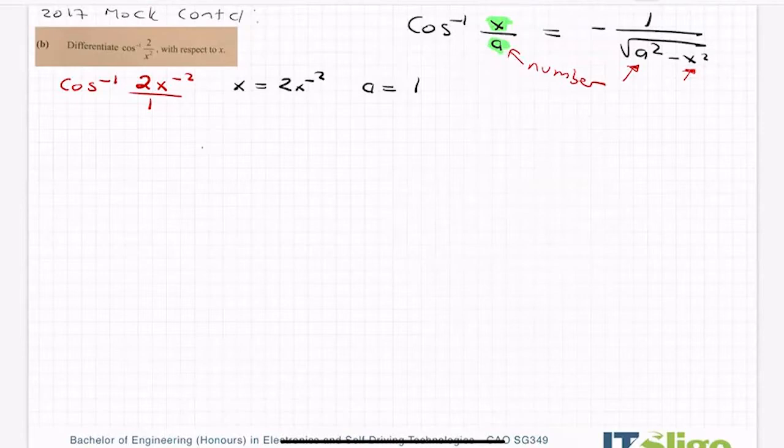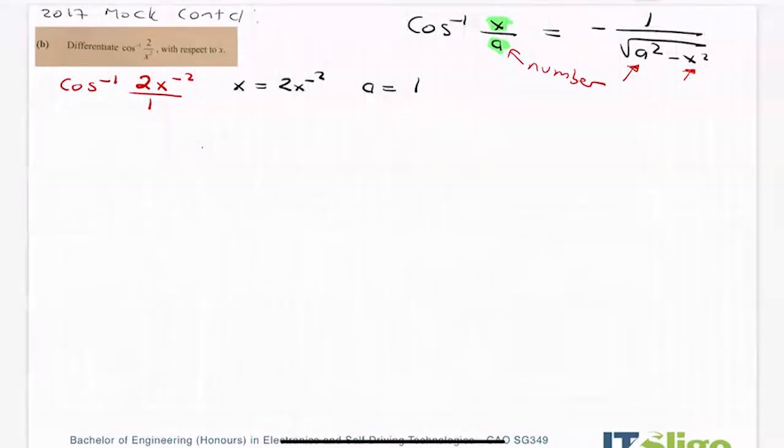Now another thing you have to be very careful of when you're doing these ones, and that's why this one is the hardest type in my opinion that you can get, is that when you differentiate x, you get 1. Be careful because there's a bit of a chain going on in here. So in other words, x in itself can be differentiated. So let me not call it x for the purpose of differentiating it. Let me just call it u because it's a common letter used.